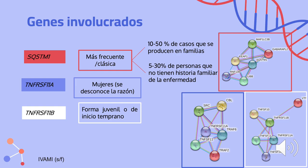Se han identificado mutaciones en el gen SQSTM1, en el gen TNFRSF11A y en el gen TNFRSF11B. Las mutaciones en el gen SQSTM1 son la causa genética más frecuente de la forma clásica, representa entre el 10 al 50% de los casos que se producen en familias y entre el 5 al 30% de personas que no tienen historia familiar de la enfermedad. Las mutaciones en el gen TNFRSF11A aumentan el riesgo de la forma clásica de la enfermedad, en particular en mujeres, pero se desconoce la razón. Las mutaciones en el gen TNFRSF11B dan lugar a la forma juvenil o de inicio temprano de la enfermedad, es decir, que se presente antes de la mediana edad.